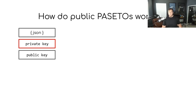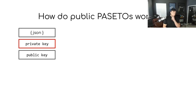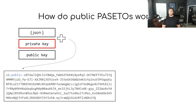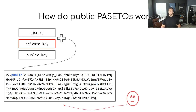Secondly, you have a public key. The public key is something you can keep as the creator and also give to anyone else in the world. Essentially, giving someone your public key is like introducing yourself — imagine meeting someone, saying 'I'm Randall,' shaking their hand, and having them recognize you from that point forward. You generate a public PASETO by combining the JSON data and the private key using a PASETO developer library with public key cryptography. Notice again that the purpose segment says 'public,' which is how you identify it.